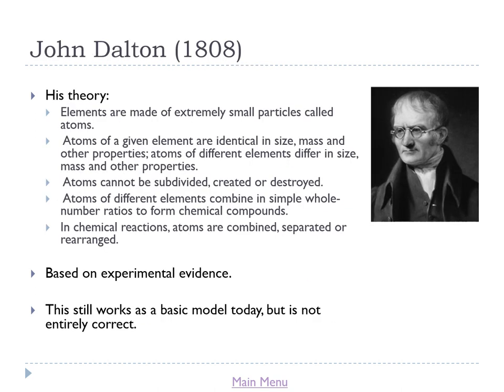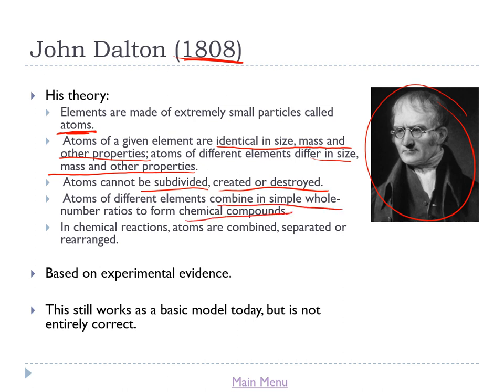Our next stop in the history of the atom is John Dalton, who put together his theory around 1808. Importantly, his theory was based on experimental evidence from looking carefully at many different reactions involving elements and compounds. He proposed that elements are made of extremely small particles called atoms — similar to Democritus' idea, but based on evidence. He said atoms of a given element are identical in size, mass, and properties; atoms of different elements differ; atoms cannot be subdivided, created or destroyed; atoms combine in simple whole number ratios to form compounds; and in chemical reactions atoms are combined, separated, or rearranged.